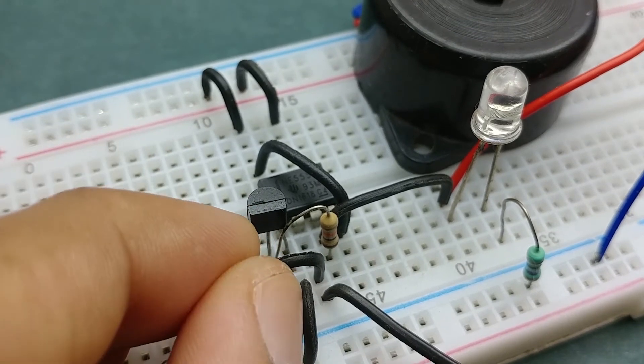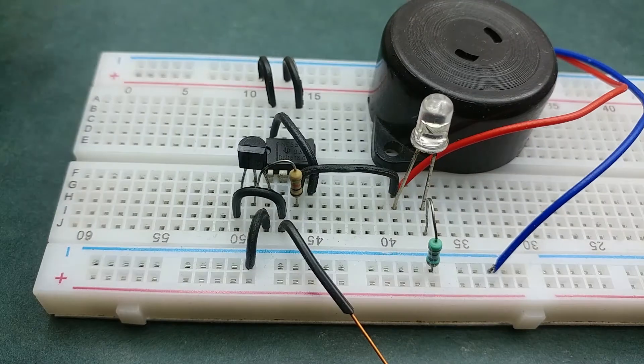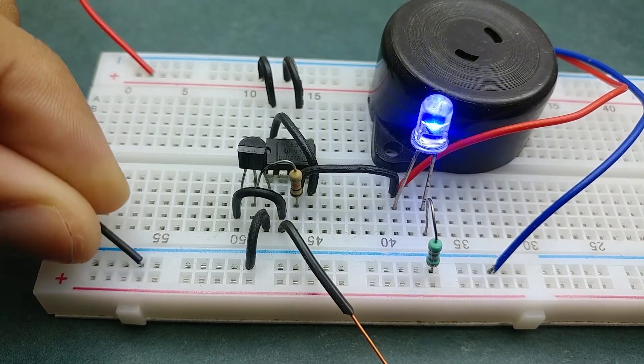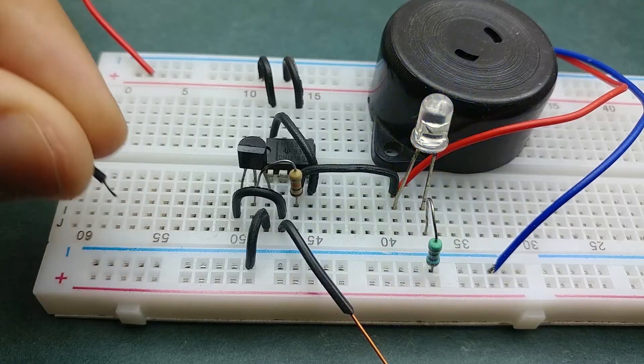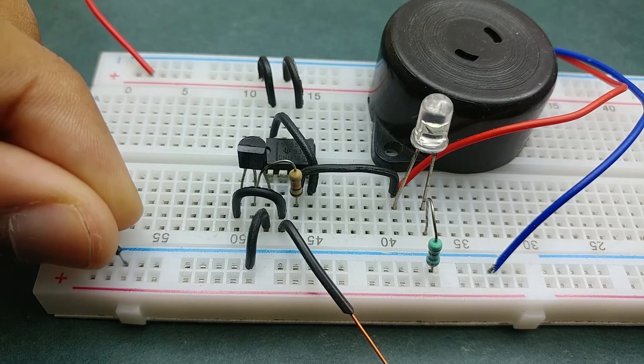Next connect the collector pin of transistor to pin 2 of the IC. If we connect the power supply at this point, the circuit triggers immediately after the power supply is turned on because of initial changes in voltages at the pins.